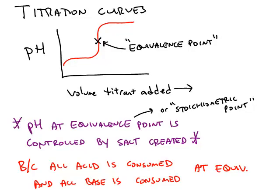An important application of acid-base chemistry is to be able to write down a titration curve such as the one shown here. This is a graph of pH versus volume of titrant added.